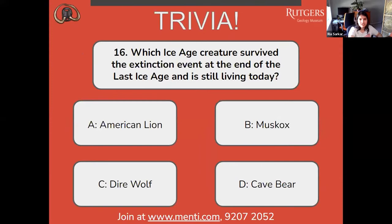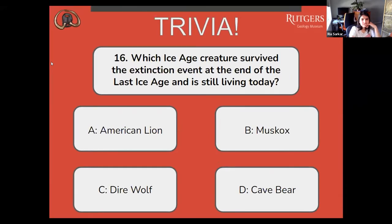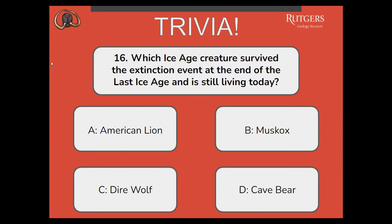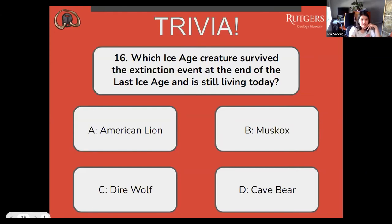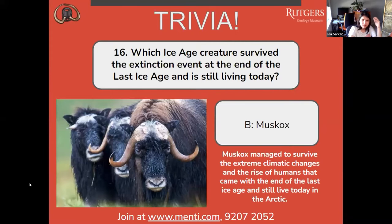Which ice age creature survived the extinction event at the end of the last ice age and is still living today? Is it A, an American lion; B, musk ox; C, dire wolf; or D, cave bear? The correct answer is B, musk ox. Musk oxen managed to survive the extreme climatic changes and the rise of humans at the end of the last ice age, and still live today in the Arctic.